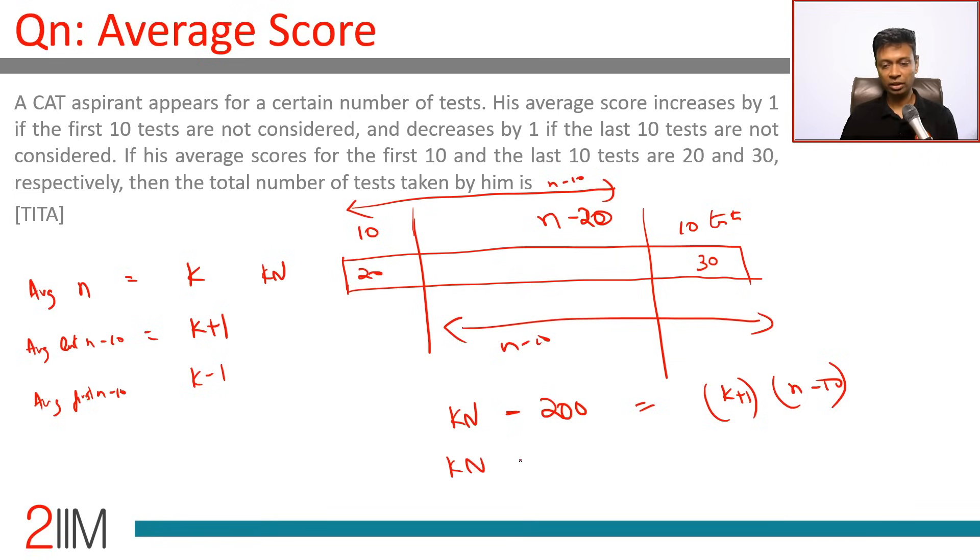From this kn, if we subtract 300, this becomes k minus 1 into n minus 10.